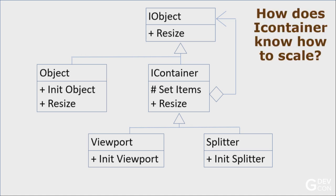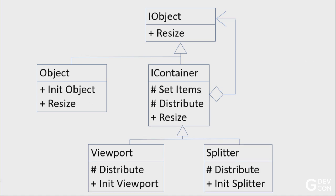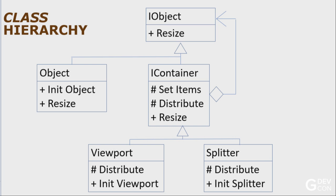How does the container know how it should resize the viewport or the splitter? You give it a 'distribute' method that's protected. The viewport implements it and the splitter implements it. Then the container calls distribute - for the viewport it will use the same bounds for every object, and for the splitter it will split proportionally.